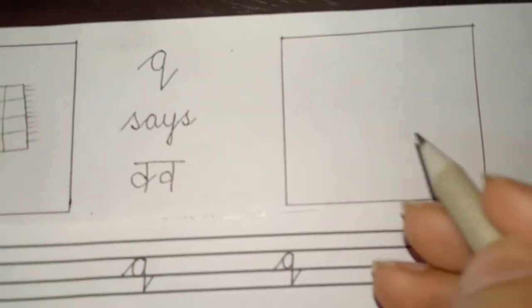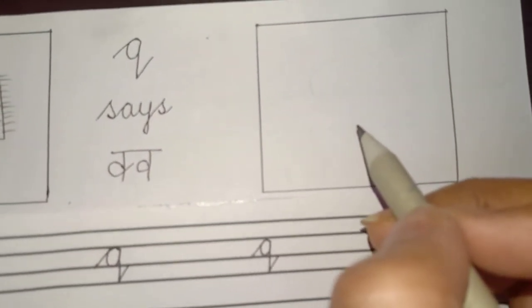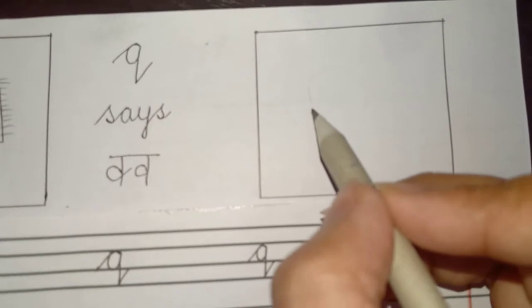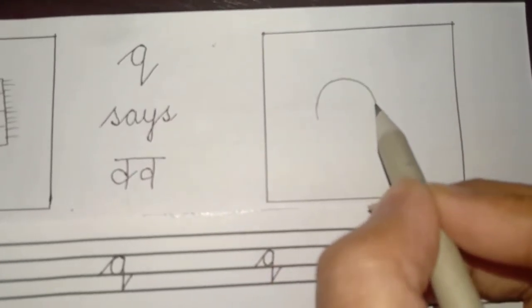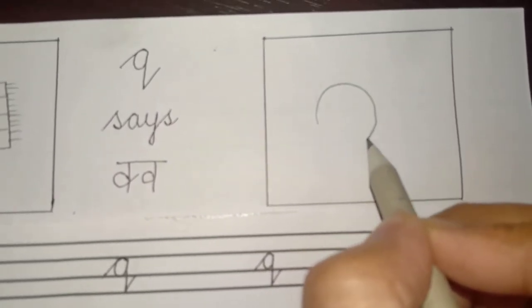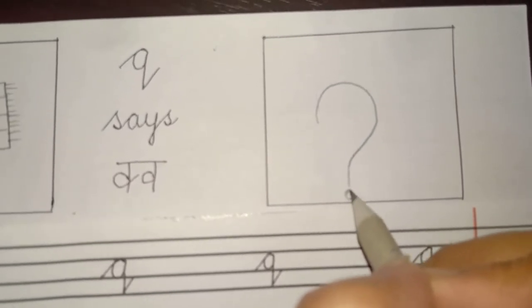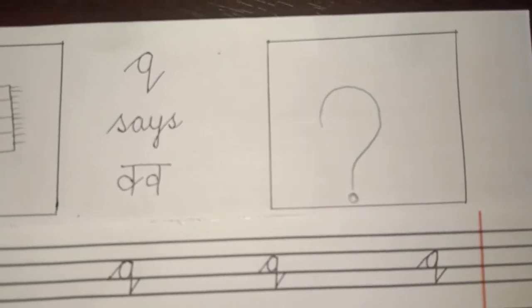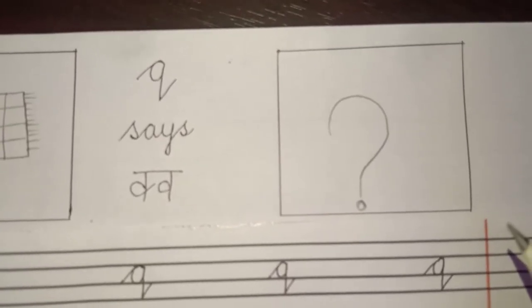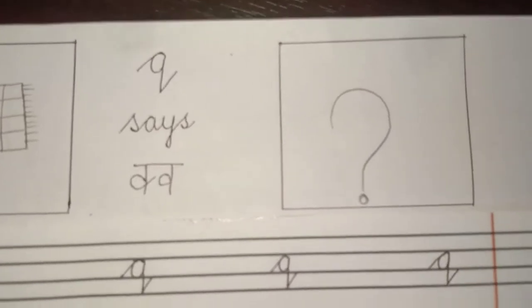In this box what are we going to draw? We are going to draw a question mark. How? Make a half semi-circle, and from here give it a tail and a small circle under it. What is this? Question mark.